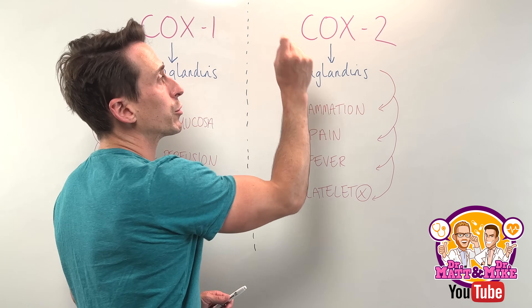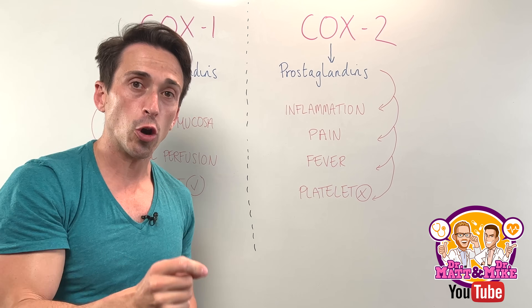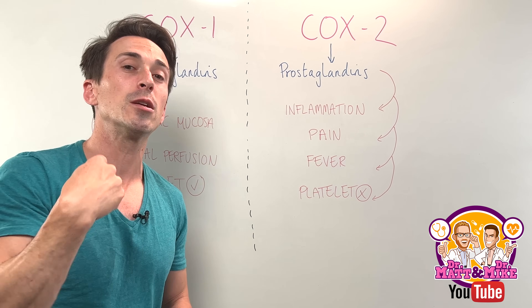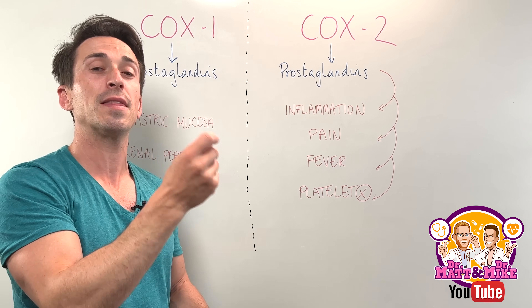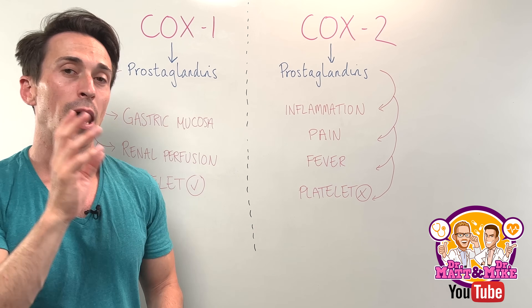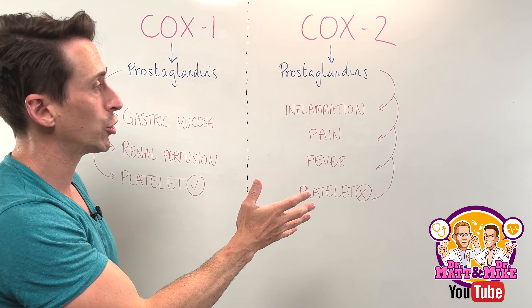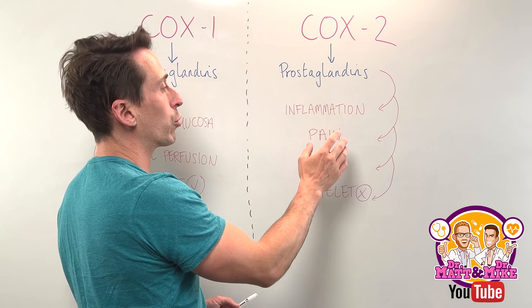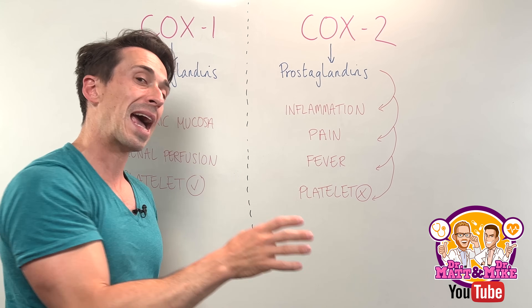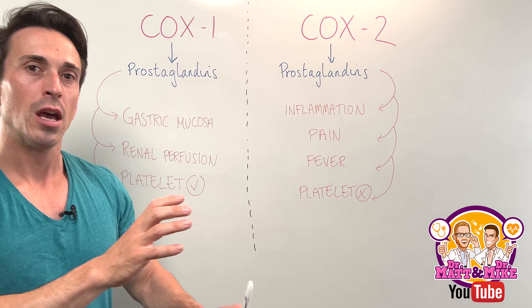The prostaglandins produced by COX-2 are not always activated — they're inducible. They need to be activated, and they're activated by tissue damage. When this happens, the prostaglandins that are produced play an important role in promoting inflammation, pain, and fever, and inhibiting platelets.